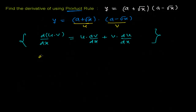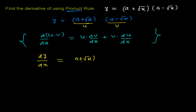Now I'm going to differentiate this function with respect to x on both sides. So dy/dx will be: first function (a + √x) times the derivative d/dx of (a − √x). And we are finished with this first part.